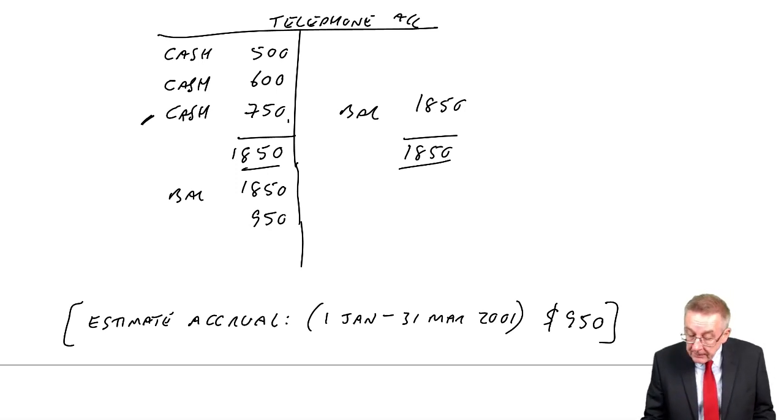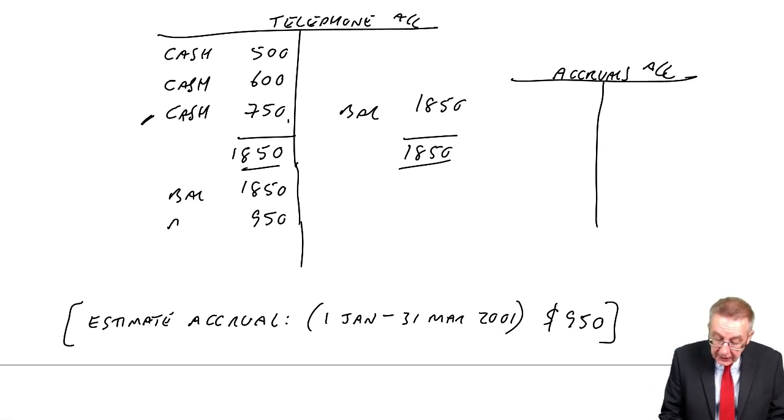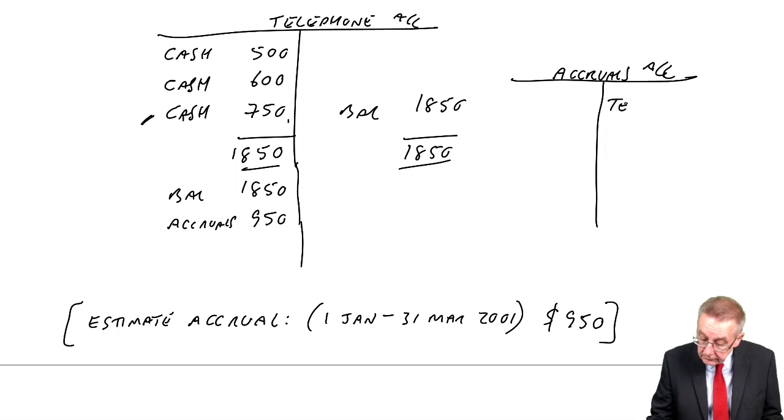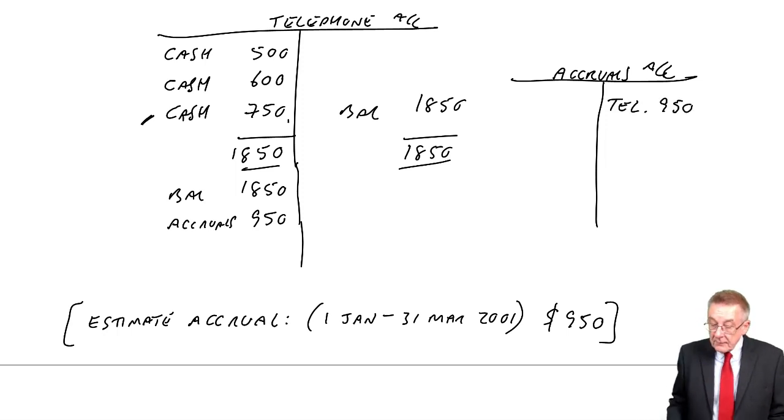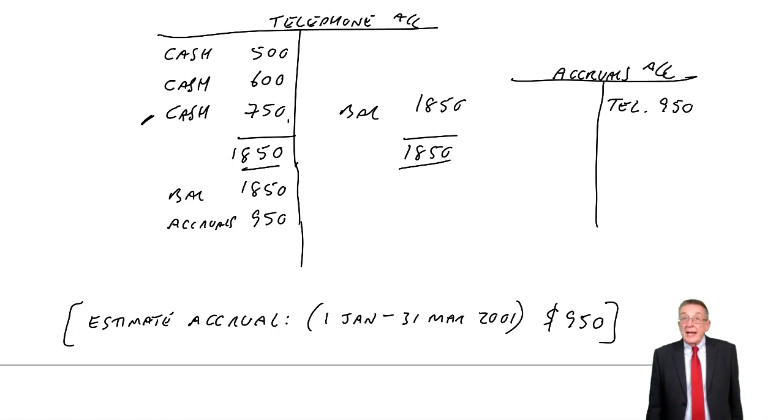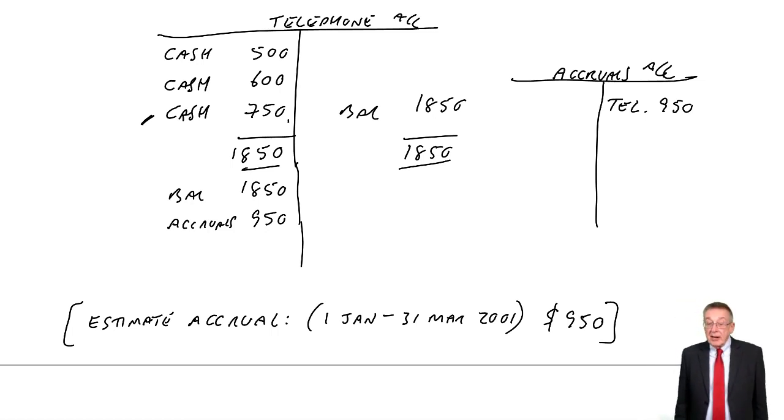Debit telephone with the extra 950 for this year. The double entry, we open a new account called accruals account. Debit telephone, credit accruals. And that one entry now makes everything right.